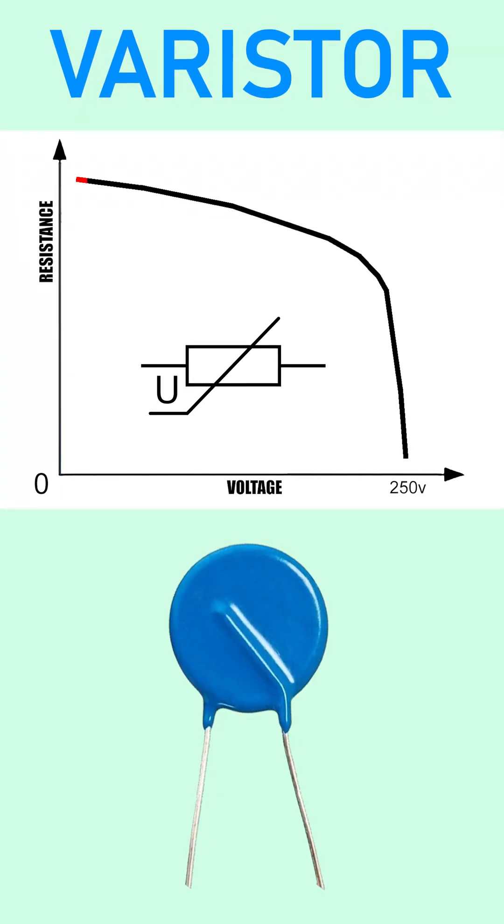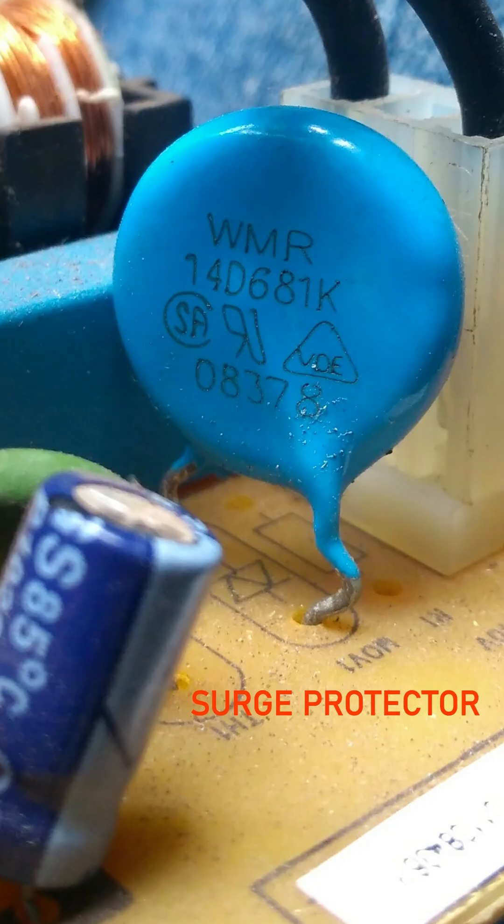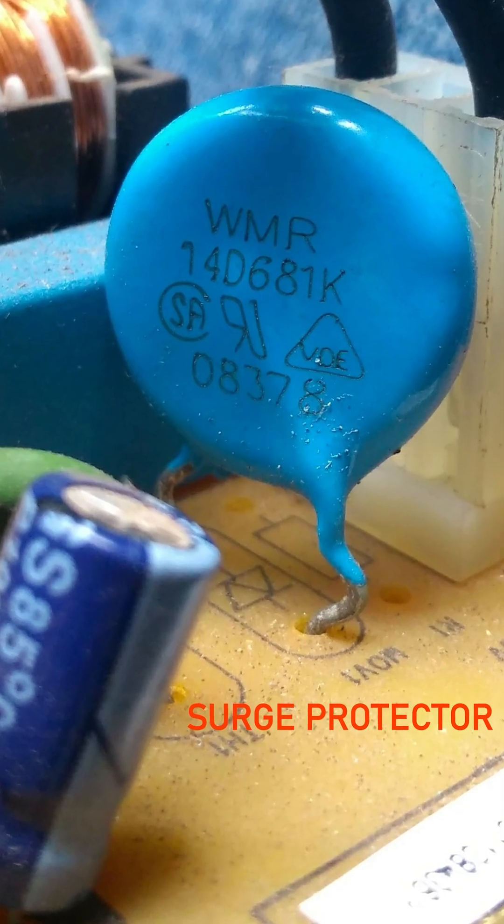A varistor is a component whose resistance drops sharply once a certain voltage threshold is reached. Thanks to this, varistors are commonly used as surge protectors in power supplies.